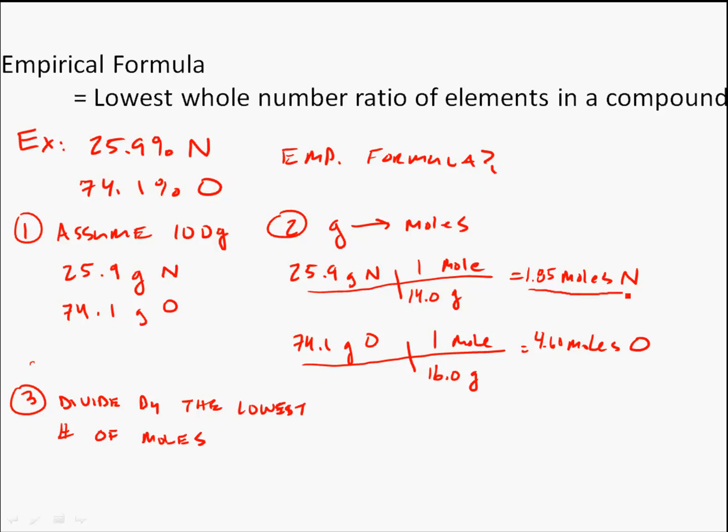That's going to give me a whole number for my nitrogen. 1.85 divided by 1.85 is one nitrogen. In my compound, in my empirical formula, I'm going to have one nitrogen.